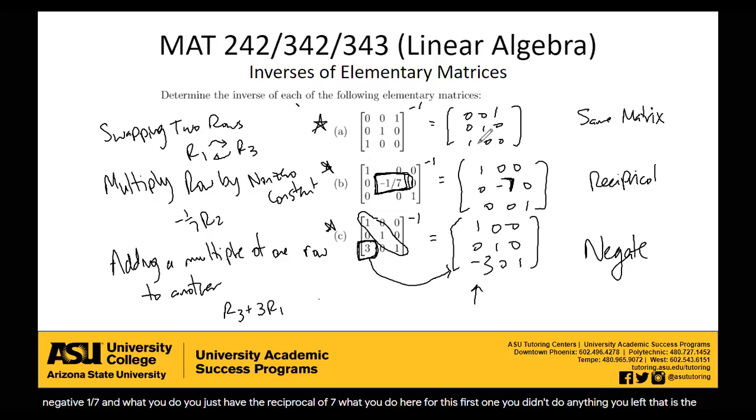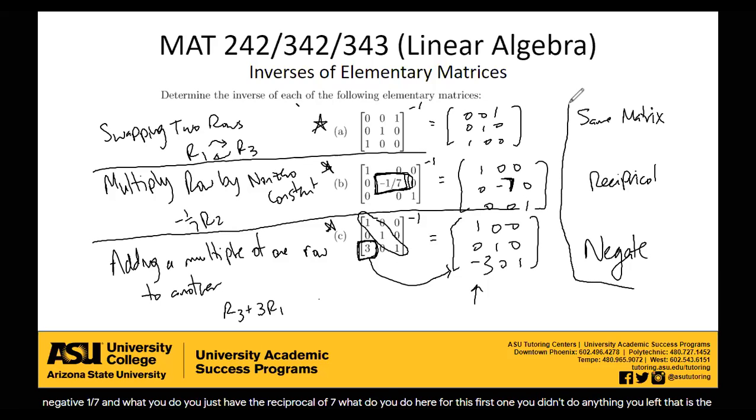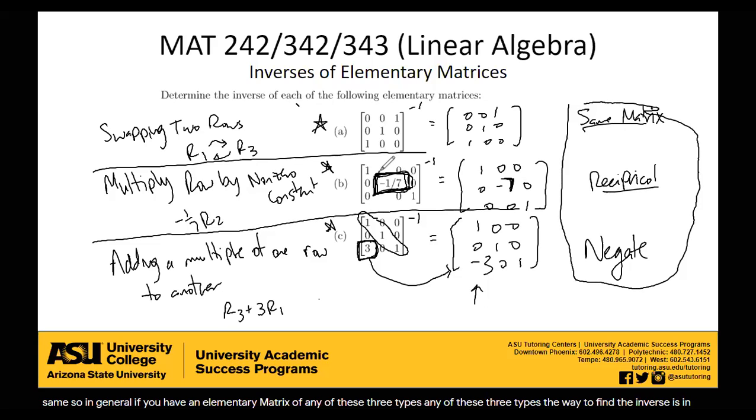So in general, if you have an elementary matrix of any of these three types, the way to find the inverse is: you either leave the matrix the same, if it's swapping two rows, you find the reciprocal of the oddball, the weird number that's not part of the identity, if you're multiplying rows by non-zero constants, or you negate the oddball, you negate the one that's not part of the identity, if you're under the case of adding a multiple from one row to another. We will be applying this in the next section when we talk about LU factorization.